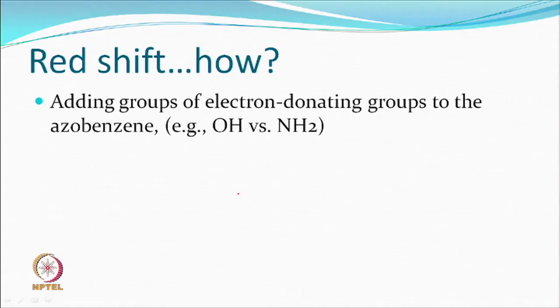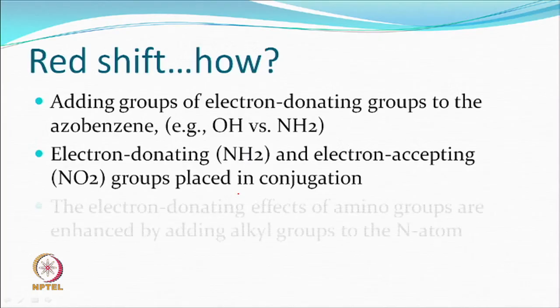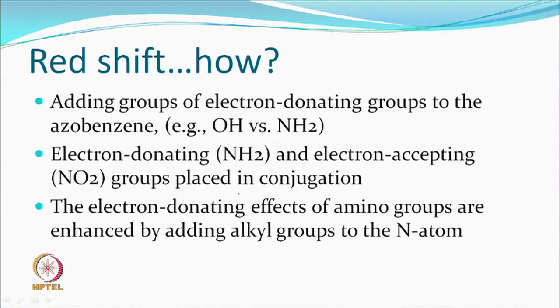A bathochromic shift can happen if you have electron-donating groups. The same azo-benzene, if you add something like NH2 or OH, things will be different. If in a molecule there is an electron-donating group like NH2 and an electron-accepting group like NO2, placed in a manner that they are part of conjugation — one is trying to take while the other is ready to give — this also helps. The electron-donating ability of NH2 can be increased by adding alkyl groups instead.